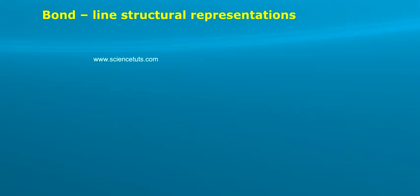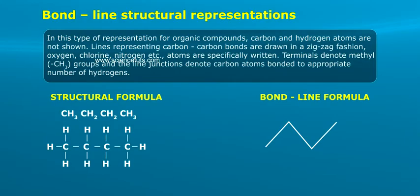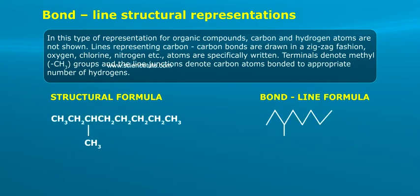Bond-line structural representations: In this type of representation for organic compounds, carbon and hydrogen atoms are not shown. Lines representing carbon-carbon bonds are drawn in a zig-zag fashion. Oxygen, chlorine, nitrogen, etc. atoms are specifically written. Terminals denote methyl CH3 groups and the line junctions denote carbon atoms bonded to the appropriate number of hydrogens.